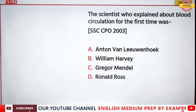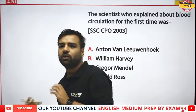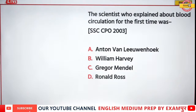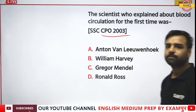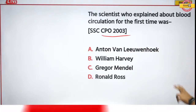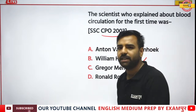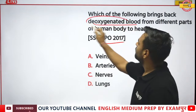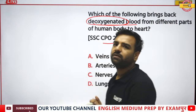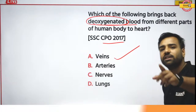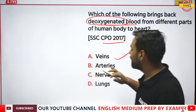The scientist who explained blood circulation for the first time was who? This is from CPU 2003. The correct answer is William Harvey. The next question: which of the following brings back deoxygenated blood from different parts of the body to the heart? This is from CPU 2017. The correct answer is B — veins. Veins carry deoxygenated blood; arteries carry oxygenated blood.